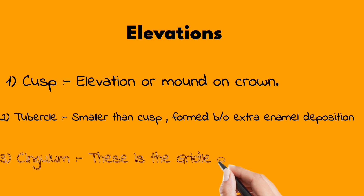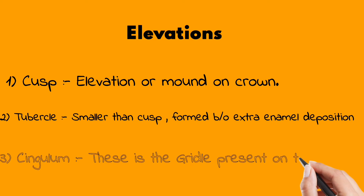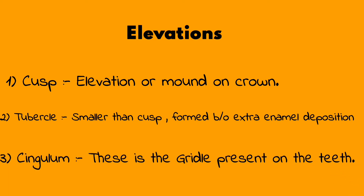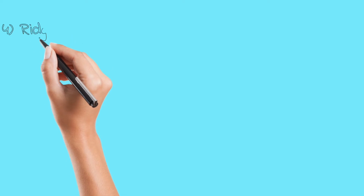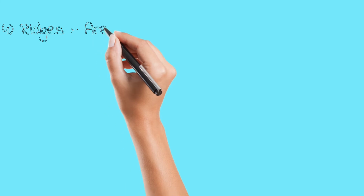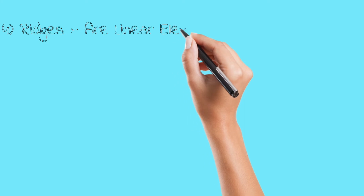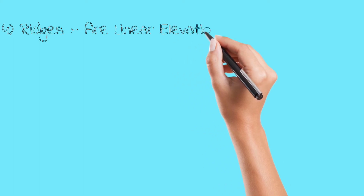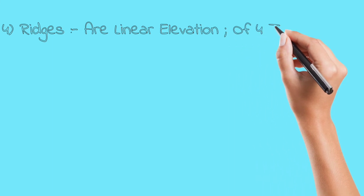Next, we have ridges, which are linear elevations. Ridges can be further divided into four types: marginal ridge, triangular ridge, transverse ridge, and oblique ridge.